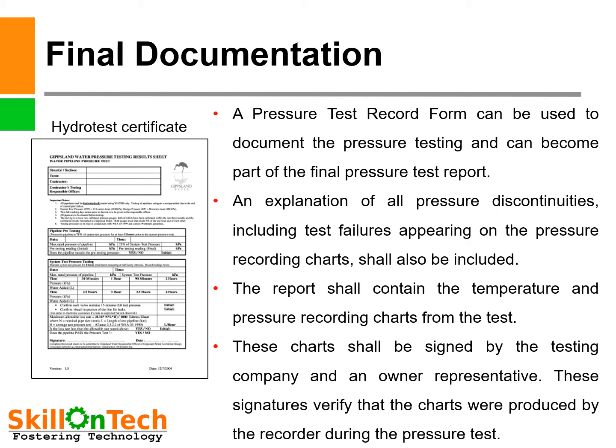After successful completion of hydrotest, documentation shall be done. A pressure test record form can be used to document the pressure testing and can become part of the final pressure test report. An explanation of all pressure discontinuities, including test failures, appearing on the pressure recording charts shall also be included. The report shall contain the temperature and pressure recording charts from the test. The chart shall be signed by the testing company and an owner representative, verifying that the charts were produced by the recorder during the hydrostatic test.